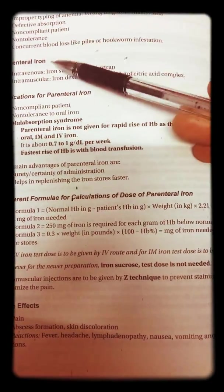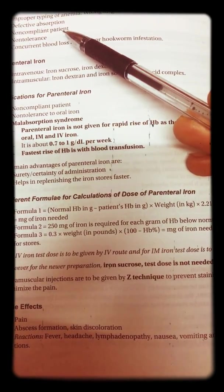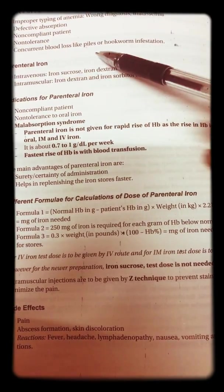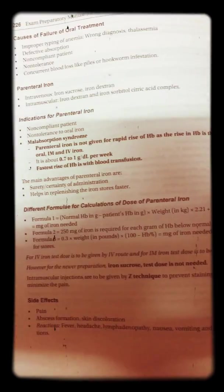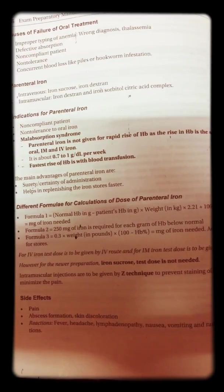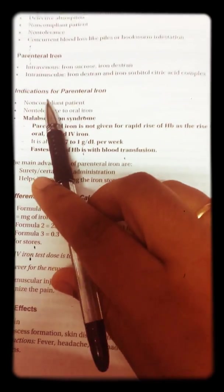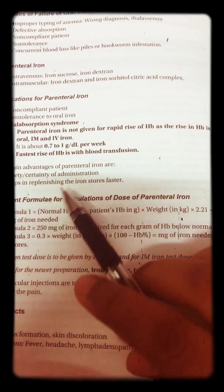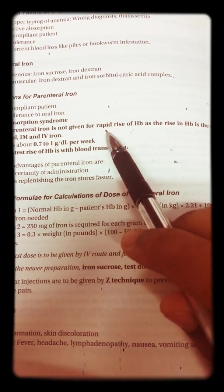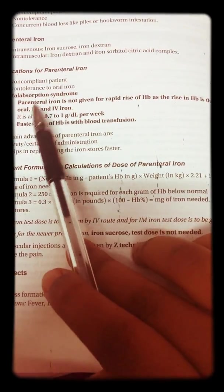Causes of failure of oral treatment include improper diagnosis, wrong type of anemia, defective absorption, non-compliant patient, non-tolerant patient, or current blood loss such as from piles or hookworm. Parenteral iron comes in two types: IV and IM. IV options include iron sucrose and iron dextran; IM includes iron dextran and iron sorbitol citric acid compound. Indications for parenteral iron are non-compliant patients, non-tolerant patients to oral iron, and malabsorption syndrome.